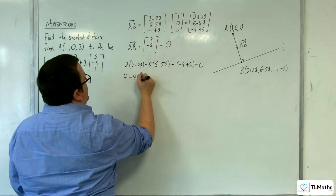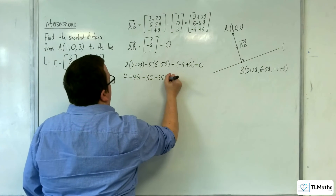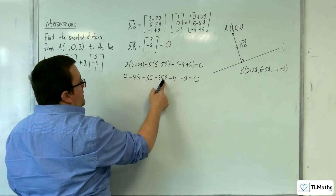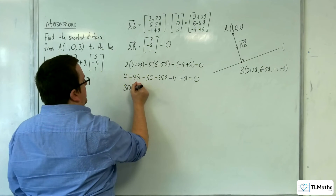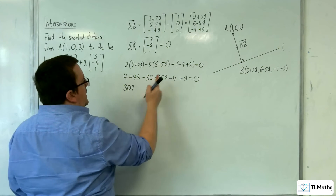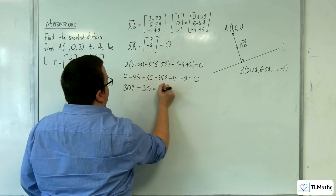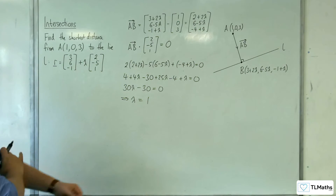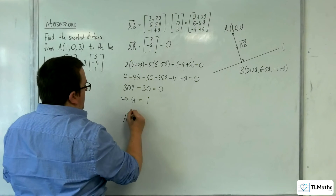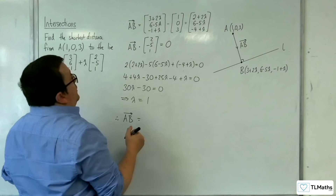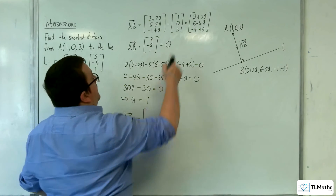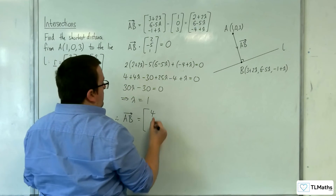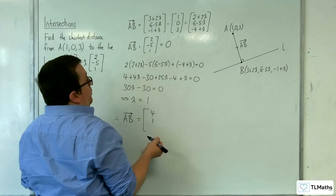So expanding: 4 plus 4λ, take away 30 plus 25λ, plus (-4+λ), giving 30λ in total for the lambda terms. The constants give 4 minus 30 minus 4, which is minus 30. So that implies lambda must be equal to 1. Substituting back into AB: 2 plus 2 is 4, 6 take away 5 is 1, and minus 4 plus 1 is minus 3. So AB equals (4, 1, -3).